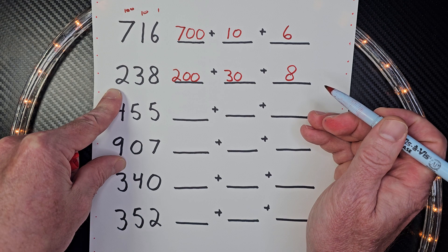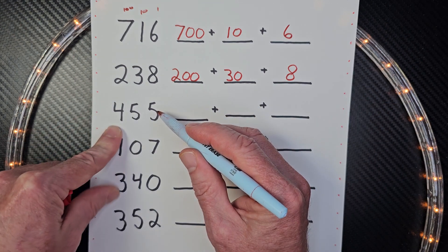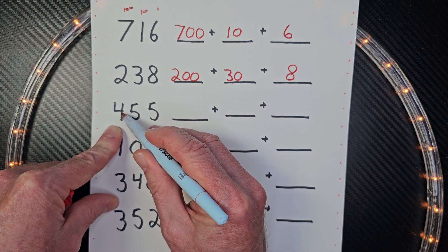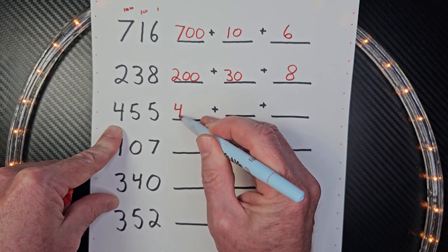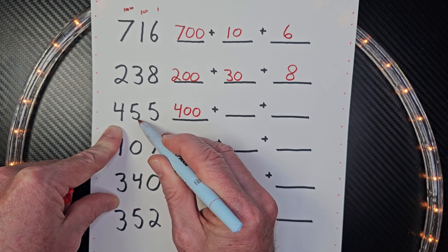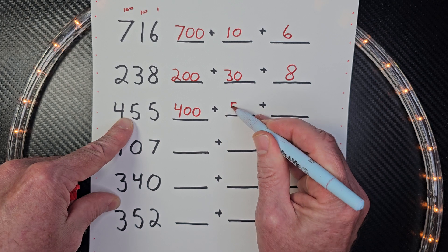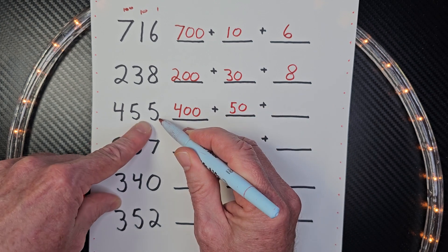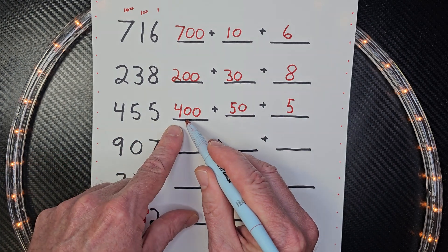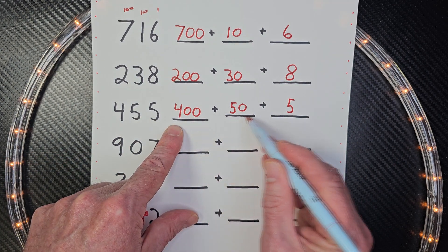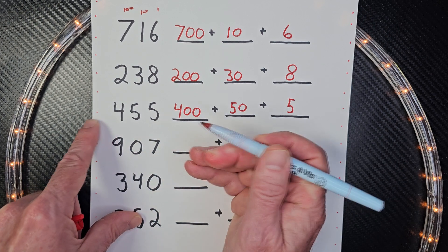It's just that simple — easy, cheesy, lemon squeezy. All right, ready to start another one? Remember, the 4 is in the hundreds place, so you would write it as 400. The 5 is in the tens place, so that would be 50. And the 5 is in the ones place, so that would be 5. Does this sound right? Four hundred fifty-five. Four hundred fifty-five. Yeah.